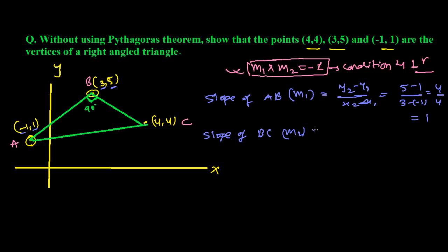Now let's find the slope of BC, call it m2. Slope of BC = (y2 - y1) / (x2 - x1). Difference of y-coordinates: 5 - 4 = 1. Difference of x-coordinates: 3 - 4 = -1. So m2 = 1 / (-1) = -1.